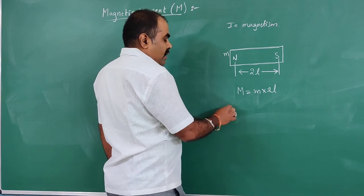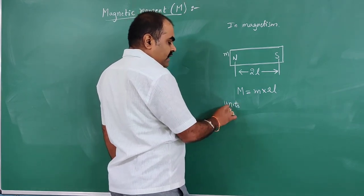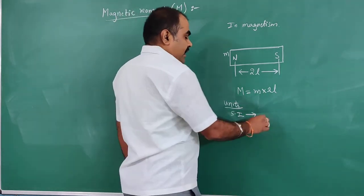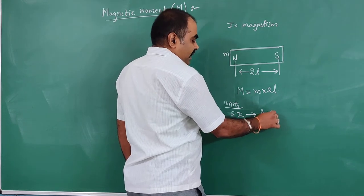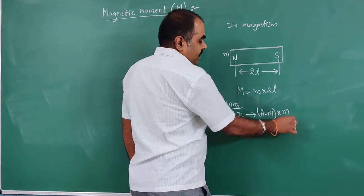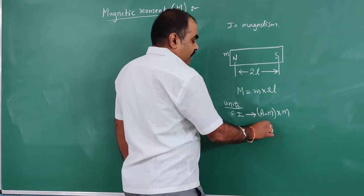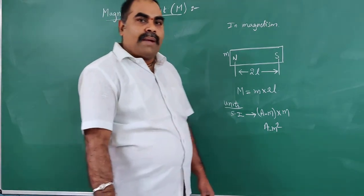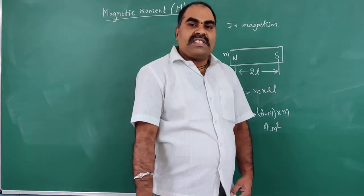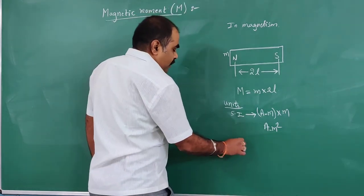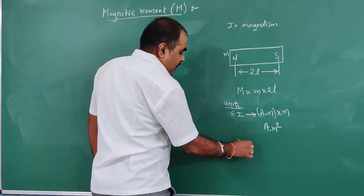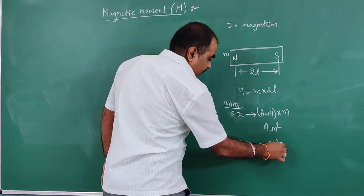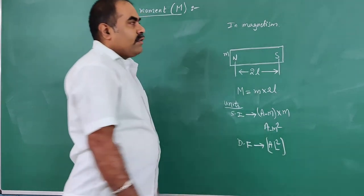In the last class we discussed its units as well. In the SI system, pole strength is represented in terms of ampere-meter, and the length of the magnet is in meters, so the unit is ampere-meter squared. The dimensional form is represented as A·L² — A for ampere and L² for length squared.